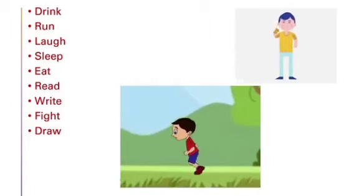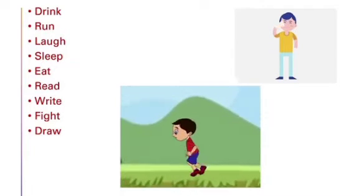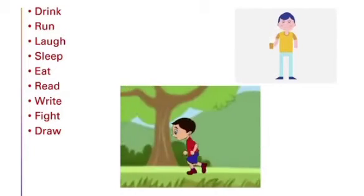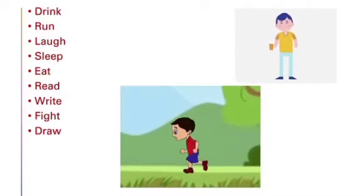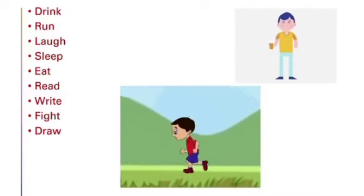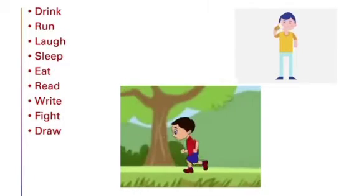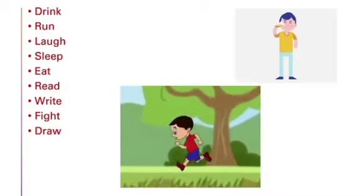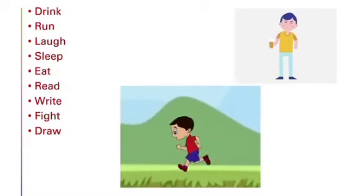These are some examples of action words. Action words are called verbs. D-R-I-N-K, drink. R-U-N, run.